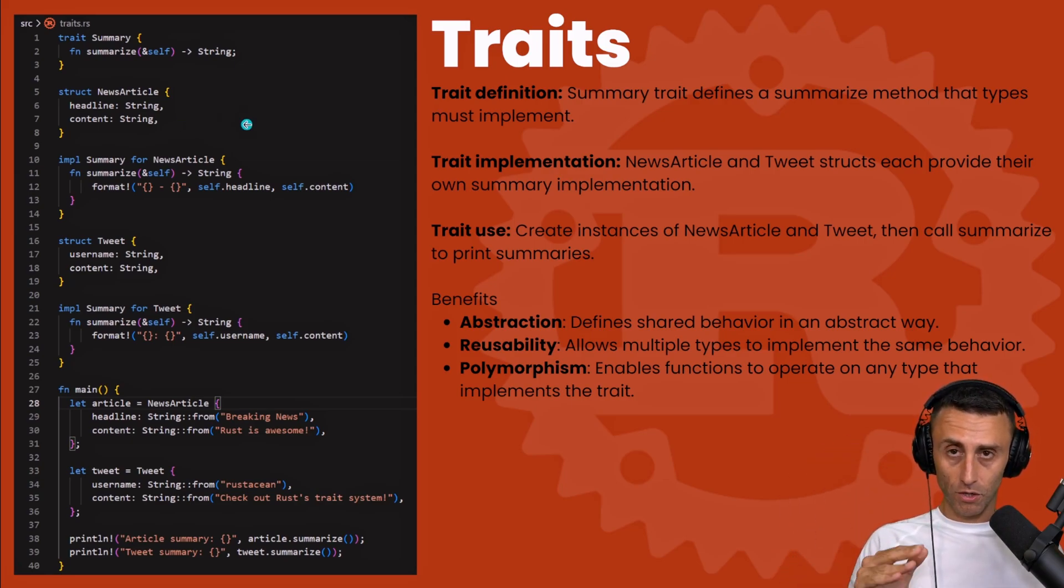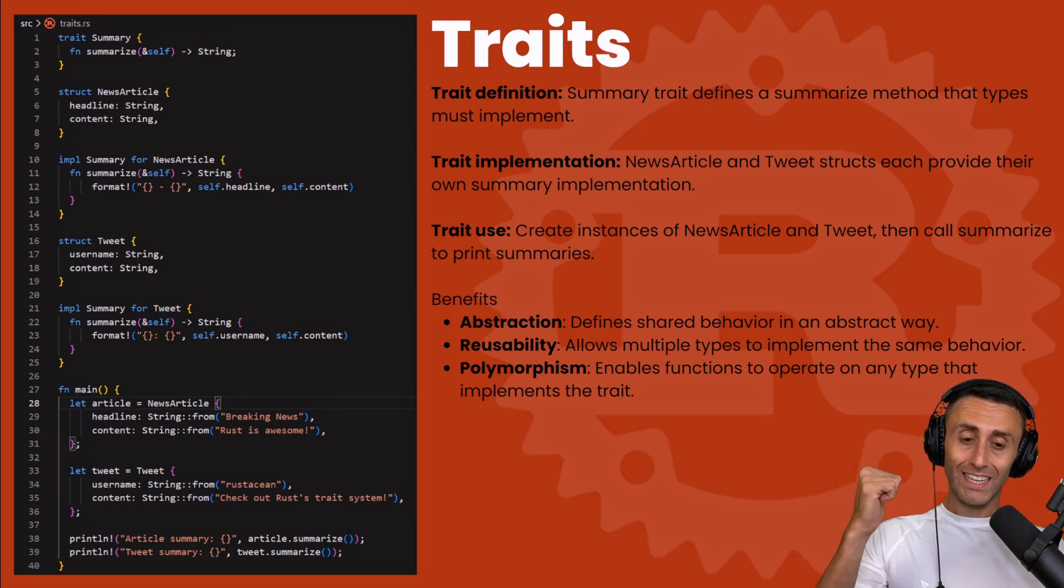And then we can use this trait when we implement a method in a struct. If you're not understanding this, please check the struct videos and methods. You can see here on line five, let's say that we want to summarize something, but we want to summarize both a news article or a tweet. Check line 5 and 16.